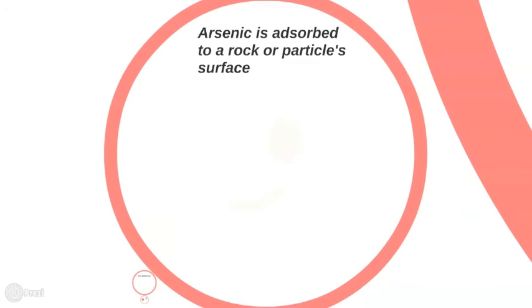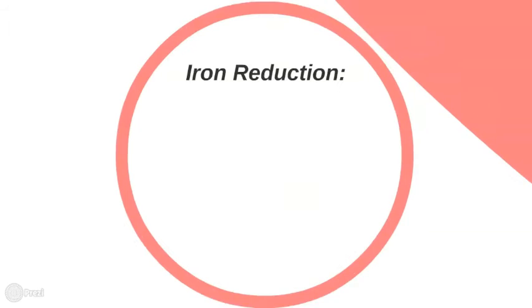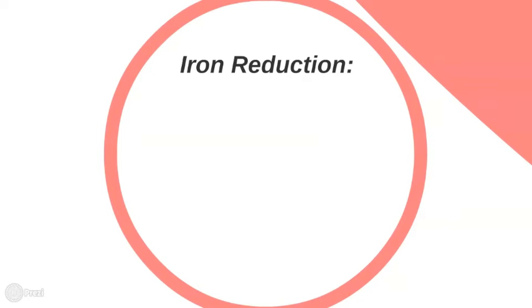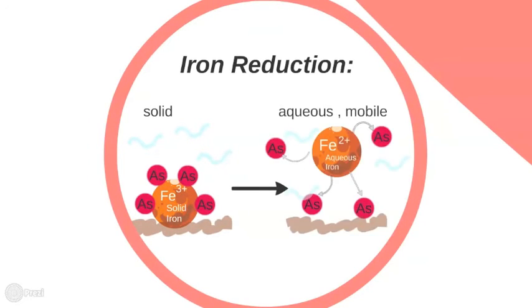Arsenic ions can remain immobilized by absorption on an oxidized iron coating found on rock or soil particle surfaces. The iron coatings on sediments are dissolved through reduction processes in waters with no oxygen. The iron in the iron coatings change from Fe3+ to Fe2+, also known as ferrous iron, and arsenic is mobilized.